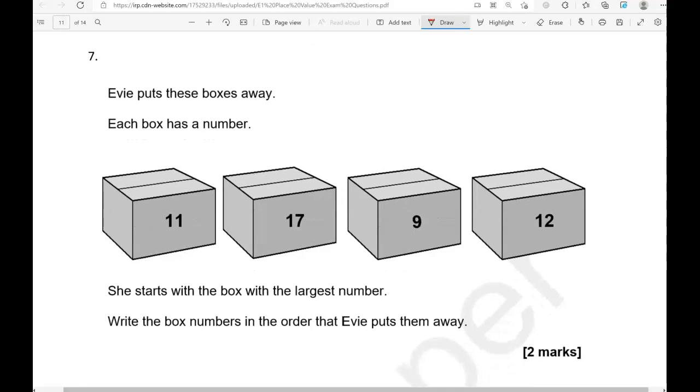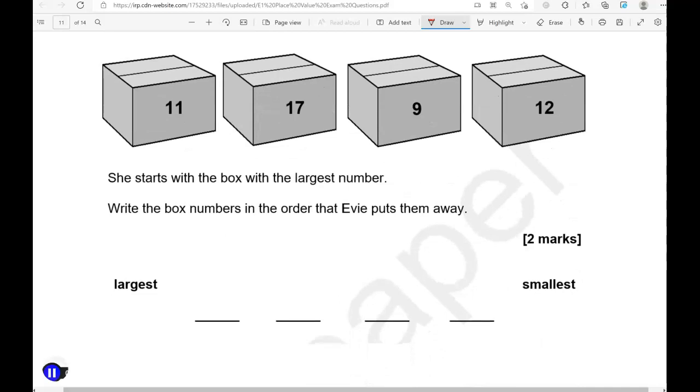Evie puts these boxes away. Each box has a number: 11, 17, 9, and 12. She starts with the box with the largest number. Write the box numbers in the order that Evie puts them away. The lowest of these is 9, that is below 10. The other three numbers are above 10, so 9 is the lowest. Then we have 11, we have 12, 13, 14, 15, 16, and then 17. So if we're going to start with the largest number, 17 will be the first one, then we'll go to 12, then 11, then 9.